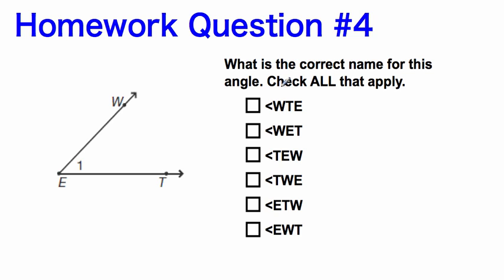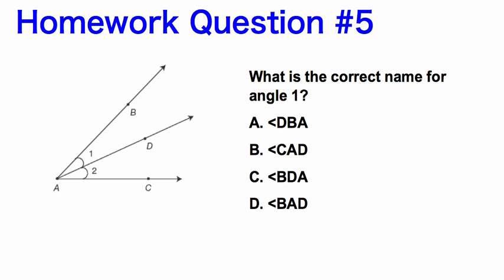Here's homework question four: What is the correct name for this angle? Check all that apply — remember, there are a couple different ways you can name an angle, so make sure you're finding all the different ways. Homework question five: What is the correct name for angle one? We're just looking at this angle here, labeled one. Nice job on completing today's homework.